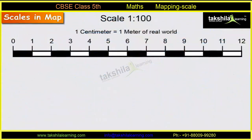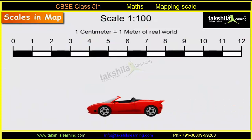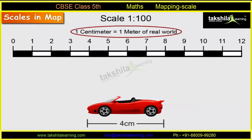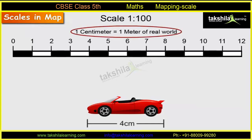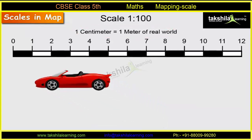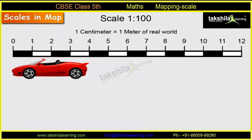Let us understand this with an example. This is a picture of a car. In this picture, the car is 4 cm long. It is given that 1 cm in the picture is equal to 1 m of the real car. Hence, the car in the real world will be 4 m long.